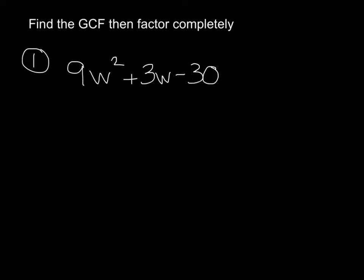If we look at this problem, it looks just the same as what we've been doing, except if you look at your terms, you have 9, 3, and negative 30. So that tells me they're all divisible by 3, so we have a GCF.